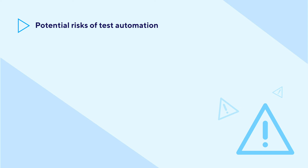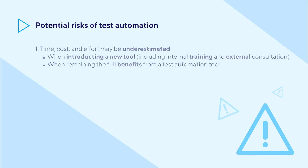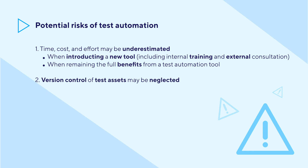Everything has two sides, and so does test automation. Beside the advantages, there are many concerns when using tools to support testing. First, the time, cost, and effort for the initial introduction of tools may be underestimated. For example, your team may need guidance from external automation experts for setup and training. You may also need to change your current testing process and make continuous improvements throughout your tool's implementation. Another problem is that version control of test assets may be neglected when your production code does not fit with the test automation code.